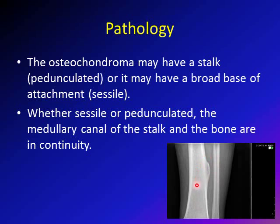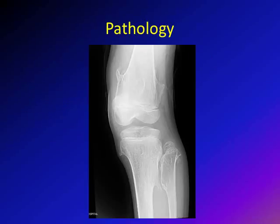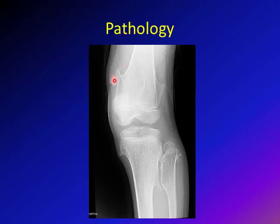Here is a sessile osteochondroma, and you can see the medullary canal of the main bone is continuous with the medullary canal of the lesion. This x-ray is from a child with multiple hereditary exostosis, or MHE, showing multiple osteochondromas affecting the skeleton. This pedunculated osteochondroma arises with a stalk, ending here, with a cartilaginous cap over it. The medulla of the osteochondroma is continuous with the medulla of the main bone.